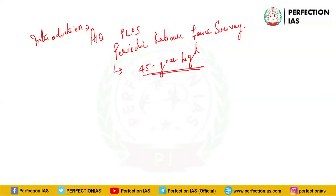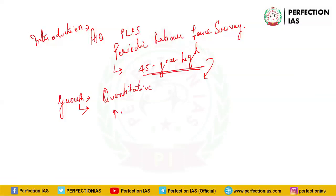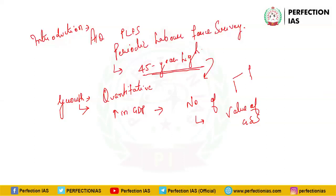This is why the issue of unemployment matters, because it correlates with socio-economic development, so it becomes very important for us to discuss it. The first part of the question asks how growth translates into employment. You can define what economic growth is. Economic growth is a quantitative concept — there is no quality aspect in it. Economic growth simply means an increase in GDP, or increasing the total value of goods and services produced.